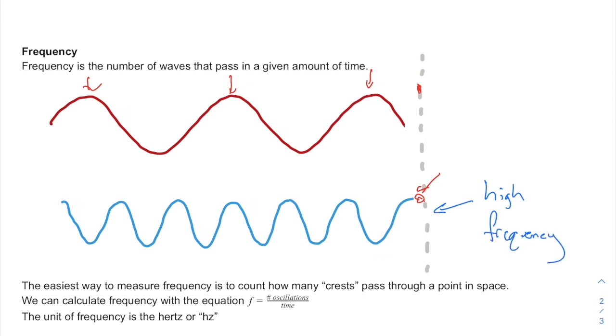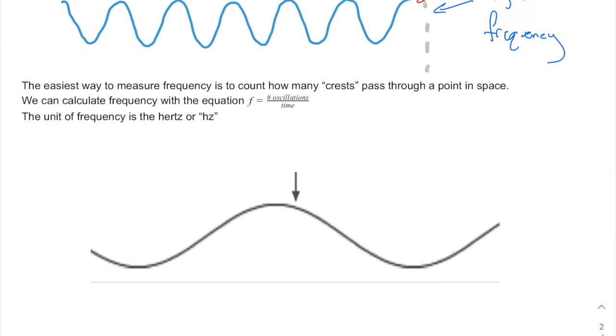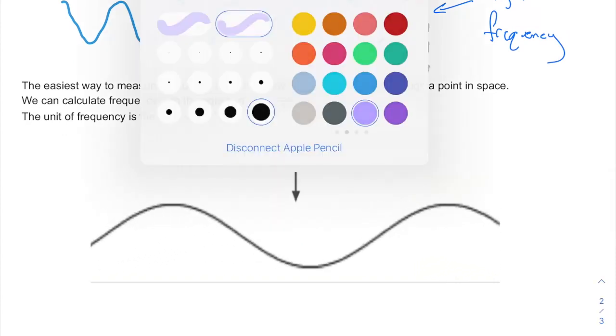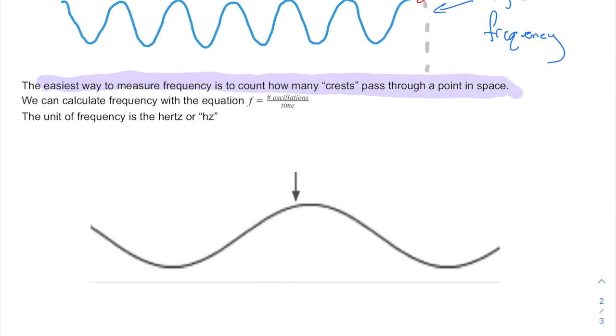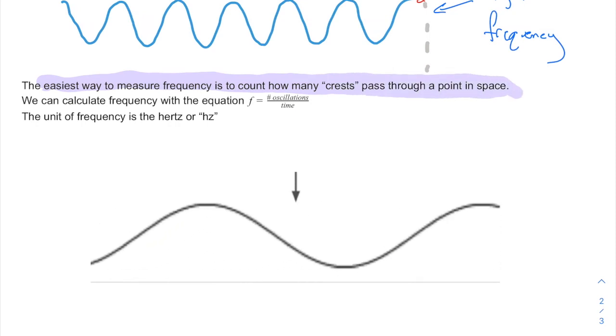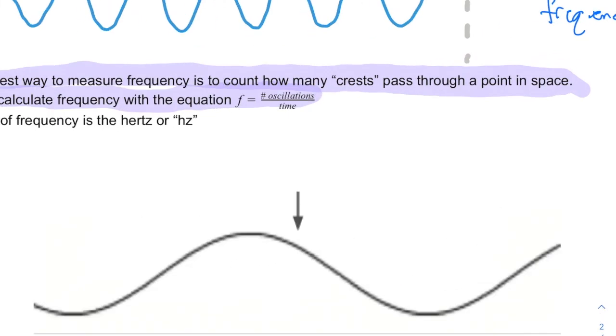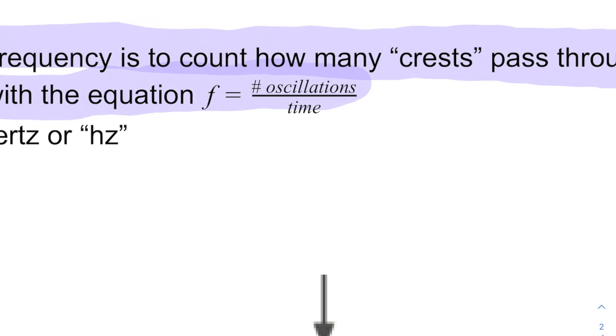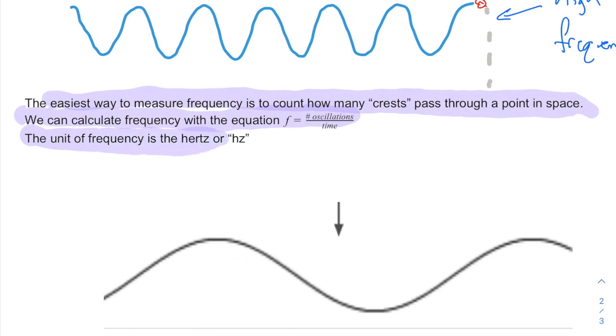The number of waves that pass a fixed point in a given amount of time. So the easiest way to measure frequency is to count. The easiest way to measure frequency is to count how many crests pass through a fixed point in space. And then we calculate frequency with the equation for frequency equals the number of oscillations, number of waves divided by the time. And the unit for frequency is the Hertz or HZ. So here's my fixed point right here.